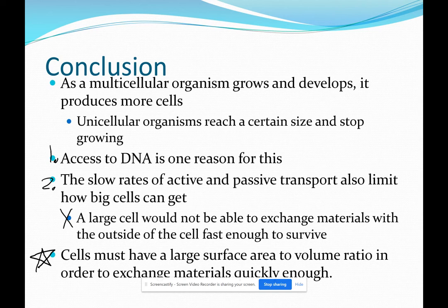Cells must have a large surface area and a small volume in order for these slow processes like diffusion, osmosis, endocytosis, whichever one you want to think about, in order for those processes to exchange materials quickly enough with the outside.